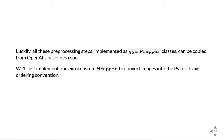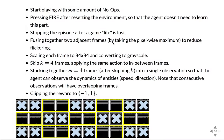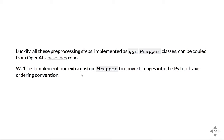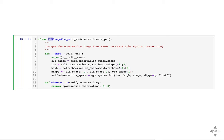Luckily, since this is a very famous paper, there's an implementation of all these things as wrappers. It's called Baselines by OpenAI — a repo with implementations of lots of RL-related things, and specifically gym wrappers for each of these pre-processing steps. The only thing we'll add is our custom wrapper to convert images into PyTorch channel-height-width axis ordering. My channel-height-width image wrapper just takes the observation and flips the axes so the channels are in the beginning, which is the convention in PyTorch for convolutional layers.